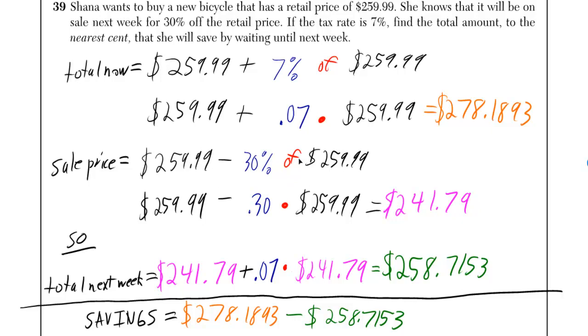Let's take off the 30% discount first. And if you put that in a calculator, you'll get 241.79. Now we need to add 7% of 241.79 to 241.79. If you do the calculation, you'll get 258.7153.